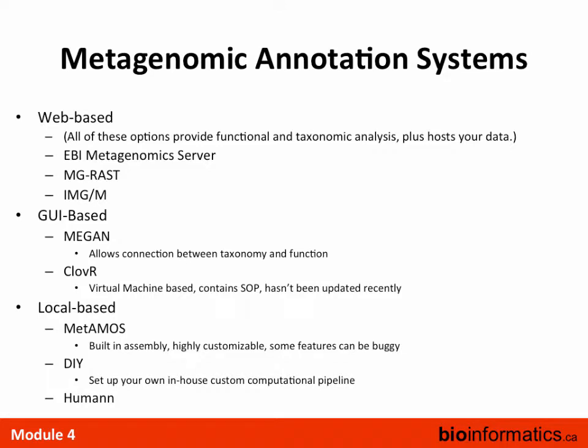So those are the protein databases — any more questions before I move into systems that use them? Now, metagenomic annotation systems work similarly to how we did classification for taxonomy, but using functions. There are web-based methods: we've already heard of MG-RAST. IMG/M, put out by JGI, used to be semi-open but now requires a login. EBI also has a metagenomics server which is public. If you want to throw data into a pipeline online, it's worth a look.